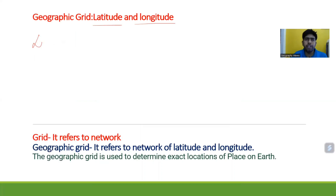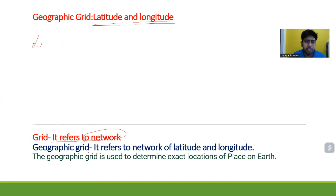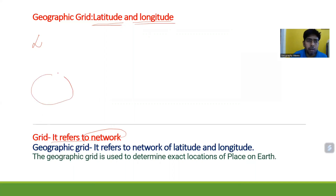Let us discuss about the meaning of latitude and longitude. First, 'grid' - it refers to a network. Grid means network of latitude and longitude. The geographic grid is used to determine the exact location of a place on Earth. So with the help of the geographic grid, we can find the location of any place on Earth.